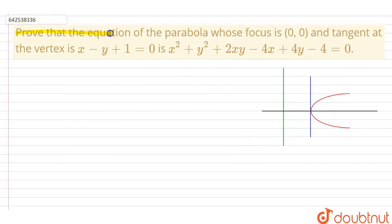So, today's question is: prove that the equation of the parabola whose focus is (0,0) and tangent at the vertex is x-y = 1 is x² + y² + 2xy - 4x + 4y - 4 = 0.